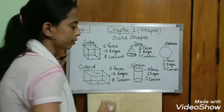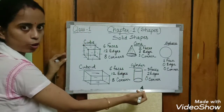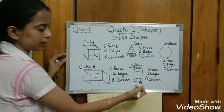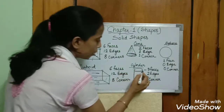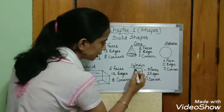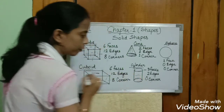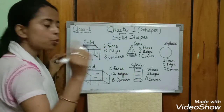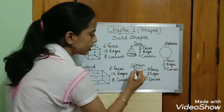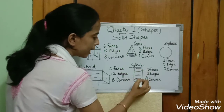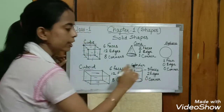Now come to cylinder. Examples of cylinder are water bottle and glass. Cylinder has three faces: the top face — one, the bottom — two, and the curved side — three. Two edges: the top circular edge and the bottom circular edge. And zero corners — cylinder has no corners.